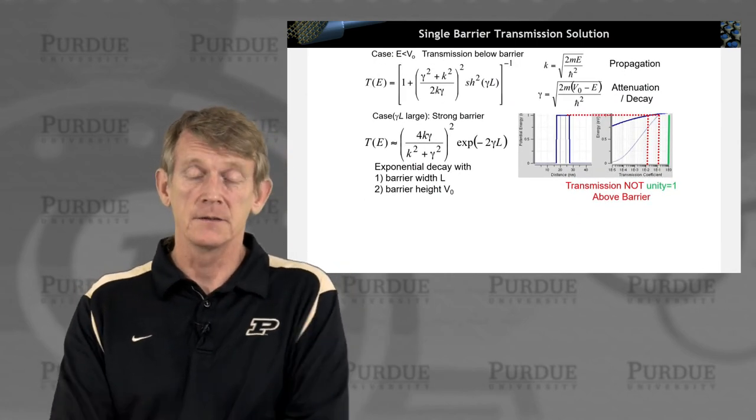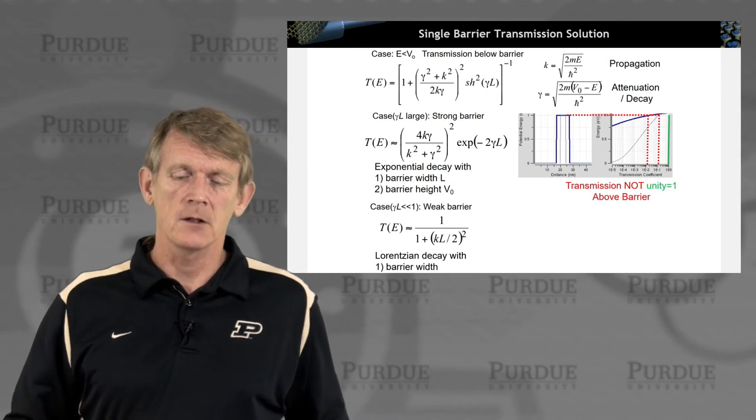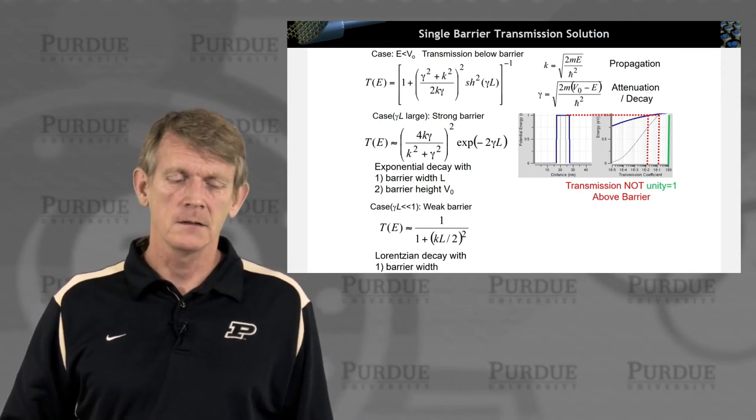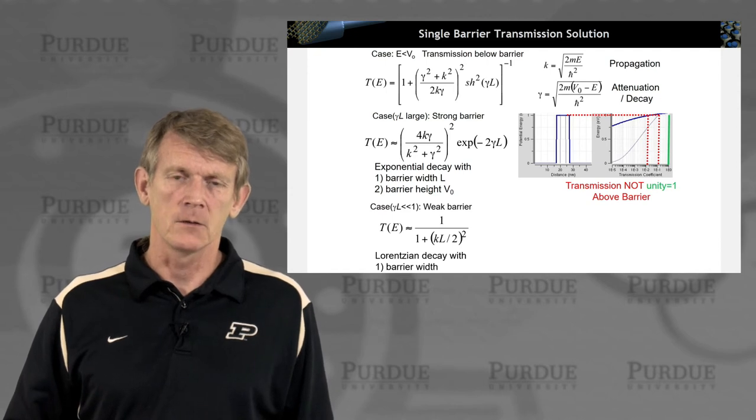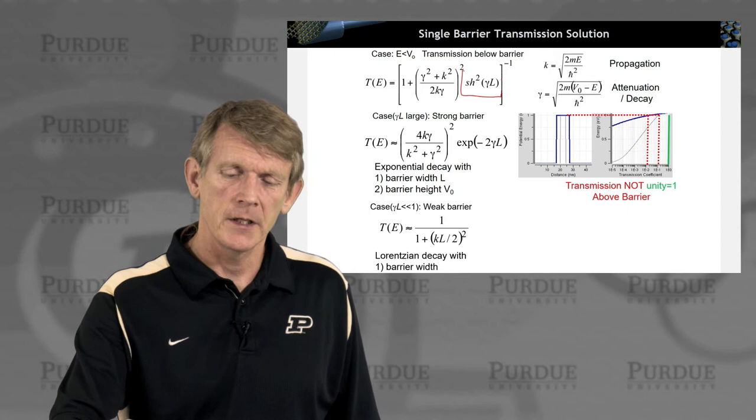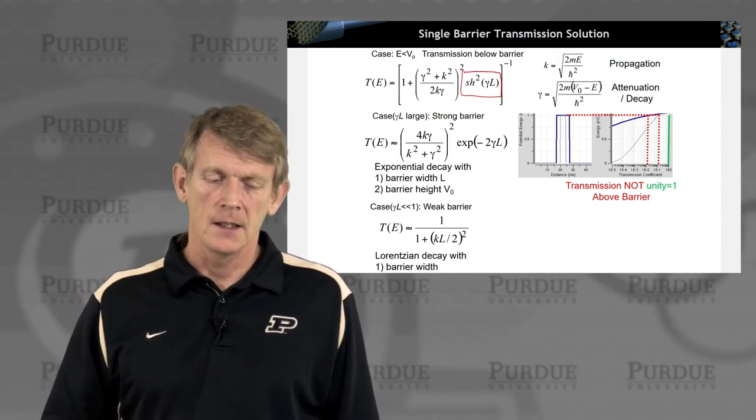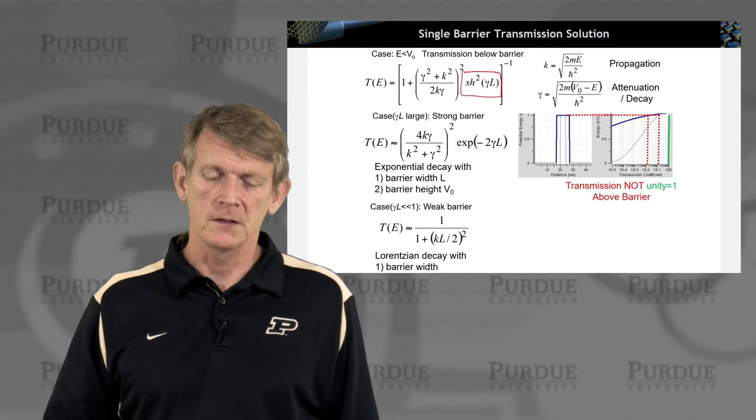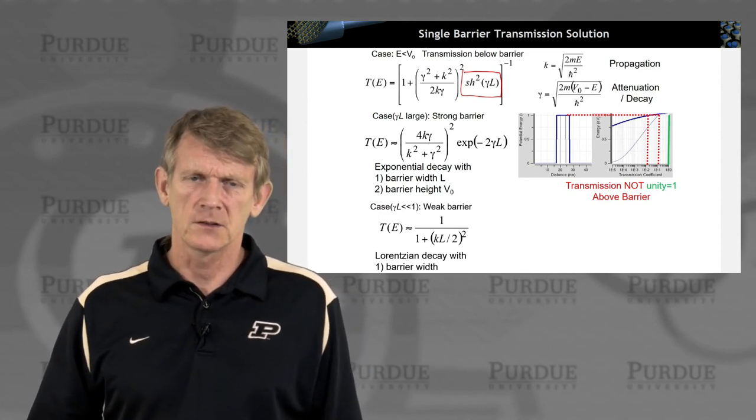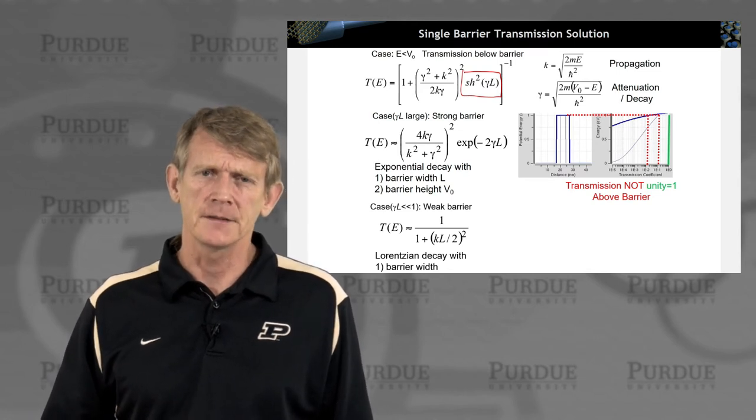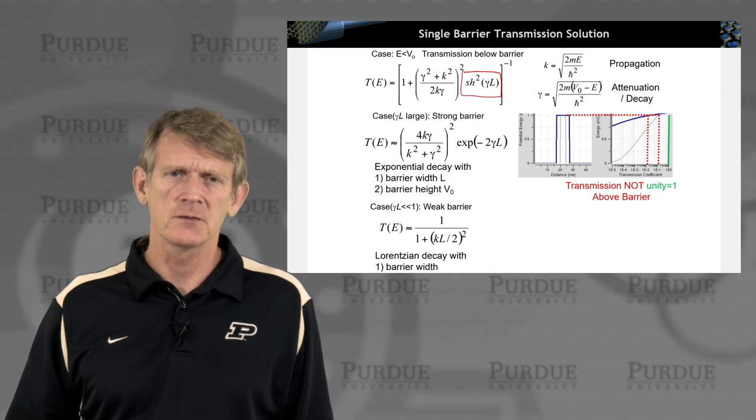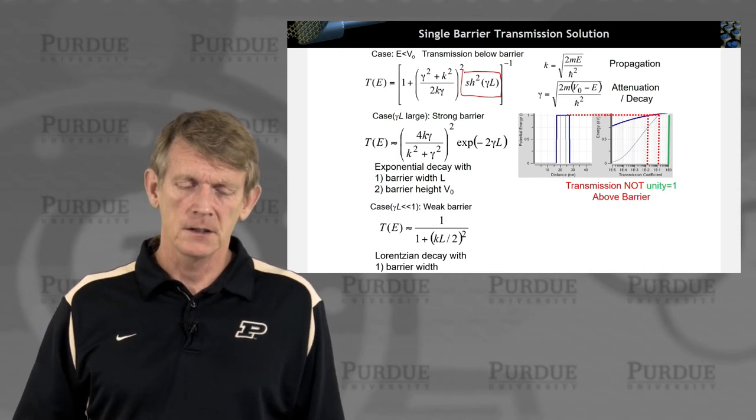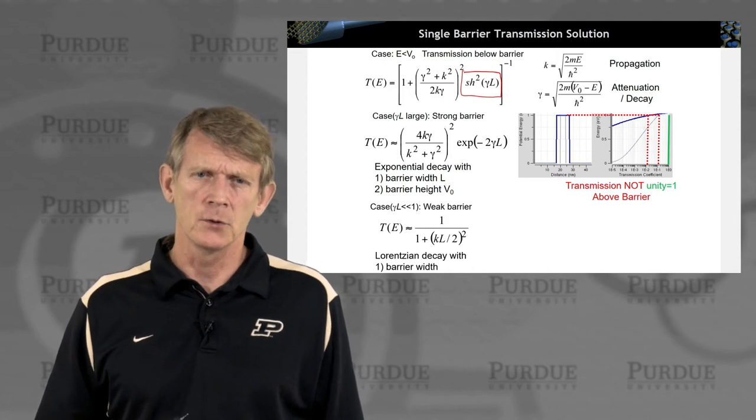We can look at a slightly different limit, the limit of a weak barrier. That's another nice case you can do analytically, where gamma L is much less than 1. That means you can do a different approximation in the expansion to the hyperbolic sine. You end up with an expression that is of a Lorentzian form: 1 over 1 plus some quantity squared. Interestingly, this Lorentzian decays with barrier width. As we said, it's a weak barrier, it lost its dependence on the barrier height. So it's purely the barrier width.